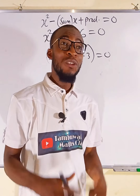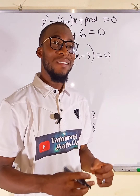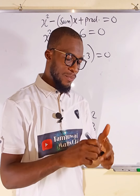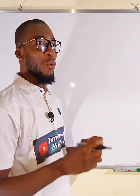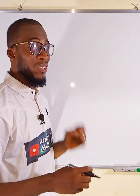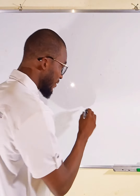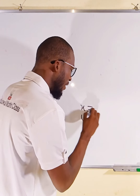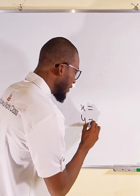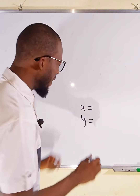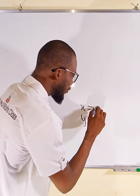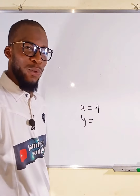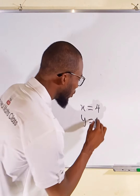So let me show you how teachers form simultaneous linear equations. Simultaneous linear equations contain two or more variables, like x and y. Let's say the teacher wants, in the end, to get the value of x to be equal to 4 and the value of y to be equal to 3.